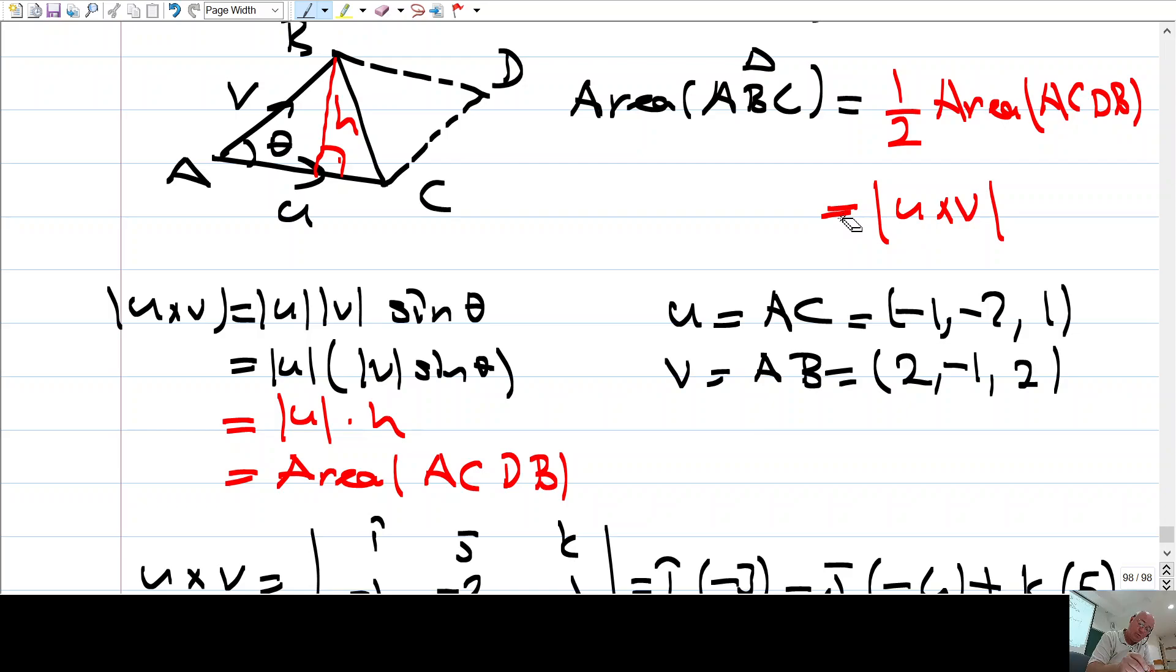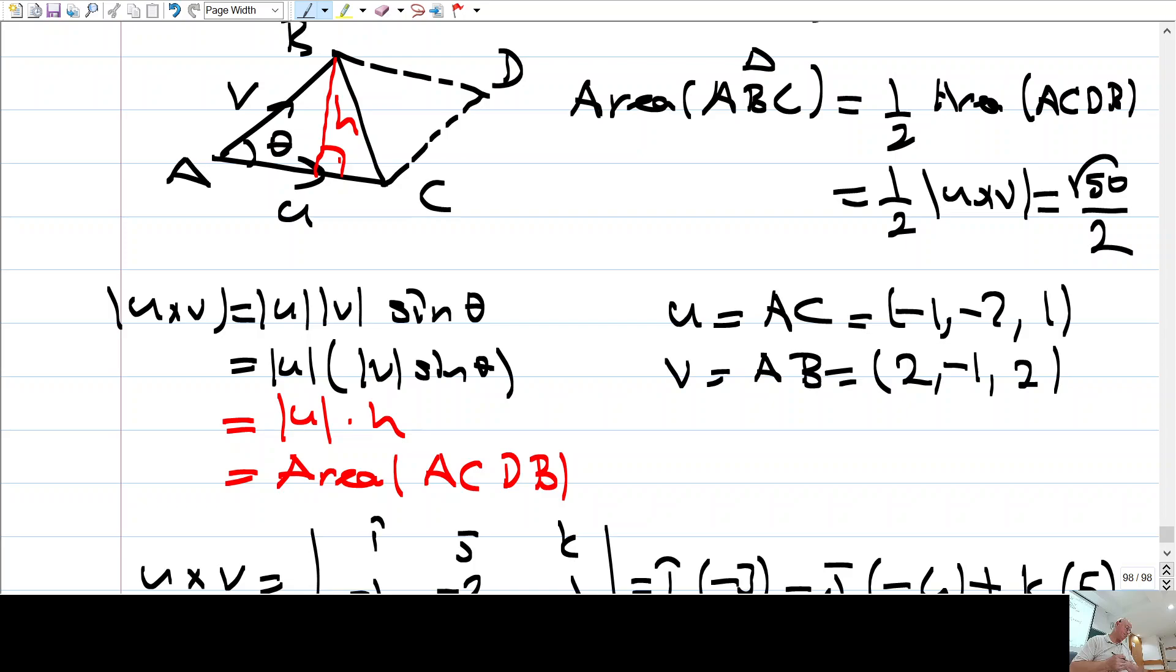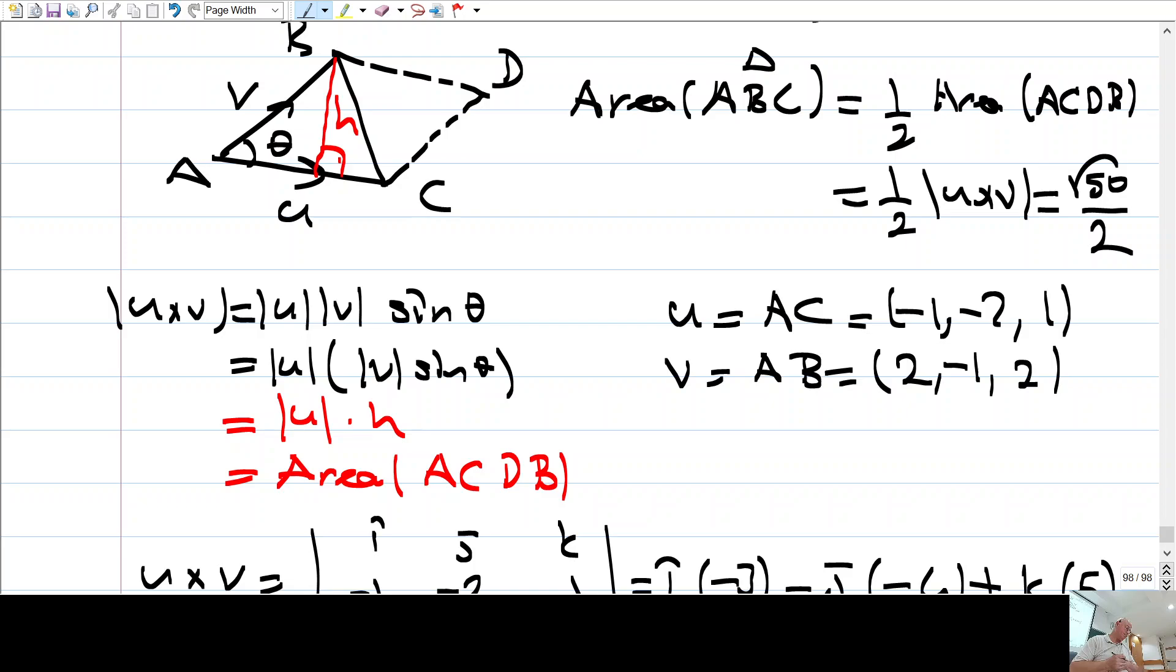Ok so 1 over 2 times 1 over 2 times the area of a c d b so 1 over 2 times this which is just squared of 50 over 2. Ok alright let's have a break after the break we we can continue go go go Thank you.